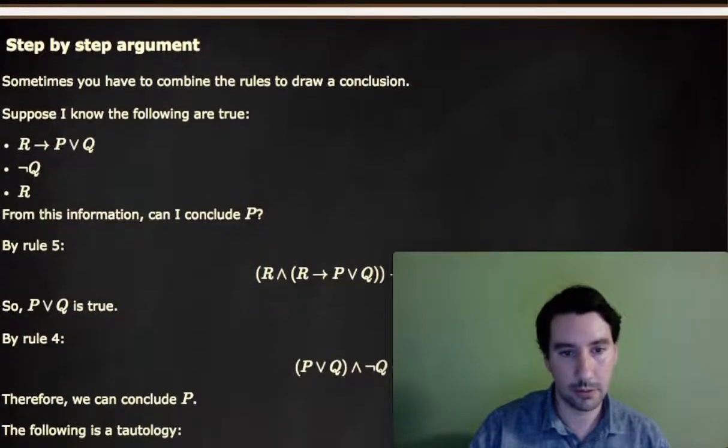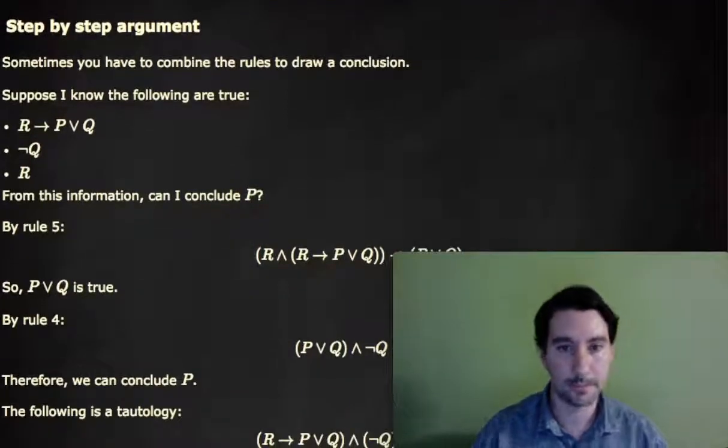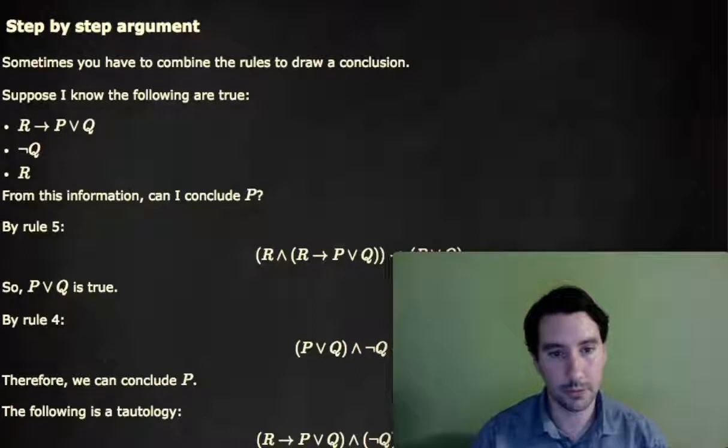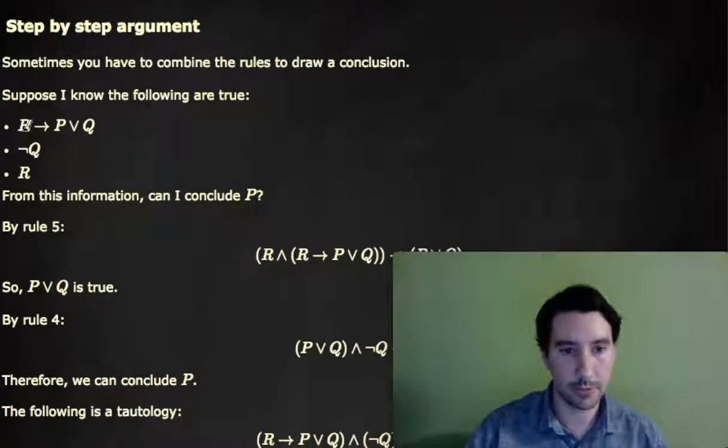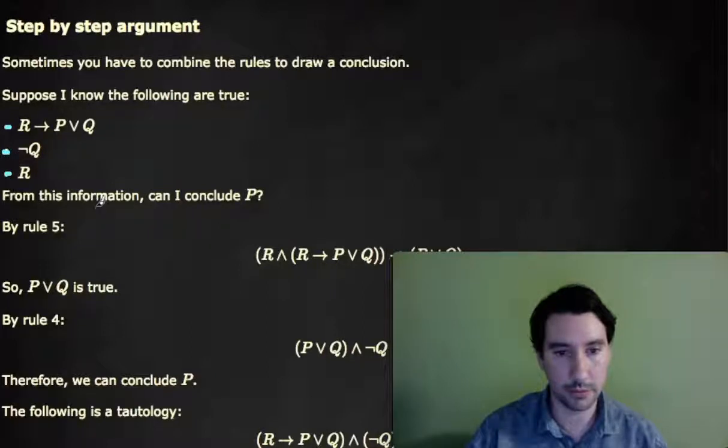So let's do an argument broken down in symbols, which shows whenever you might have to combine different rules to make a conclusion. Suppose I know the following: R would imply P or Q. I also know that Q is false. And I know that R is true. So from this information, can I conclude P?